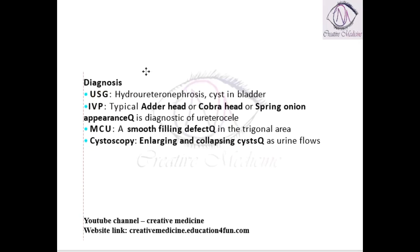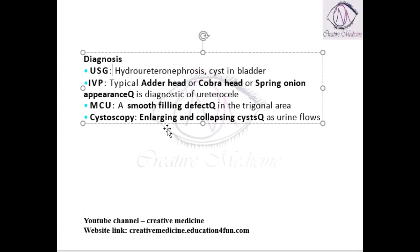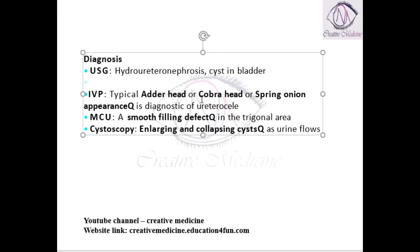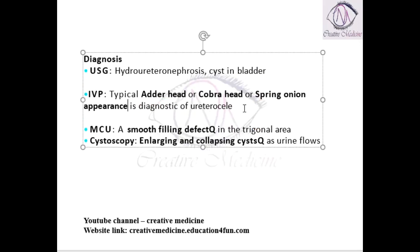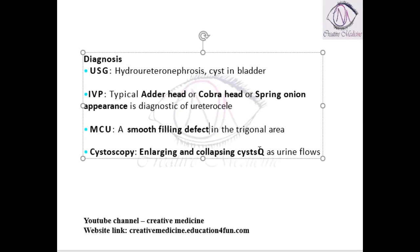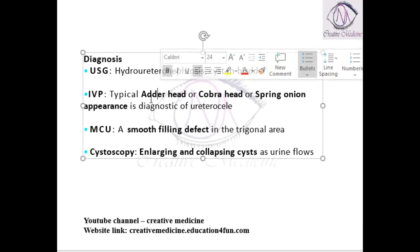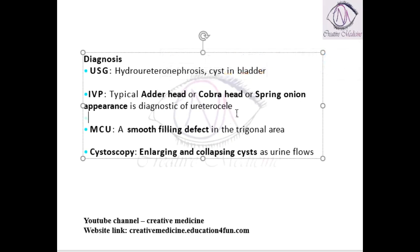Diagnosis of ureterocele is done by the following ways. On ultrasonography, hydroureteronephrosis or cysts in the bladder are seen. On intravenous pyelography, cobra head appearance, adder head appearance, or spring onion appearance is seen. These are the diagnostic features of ureterocele.